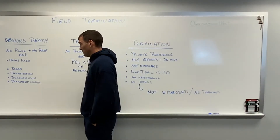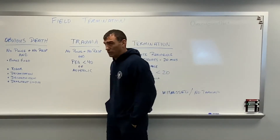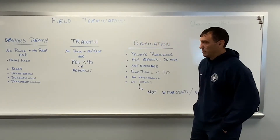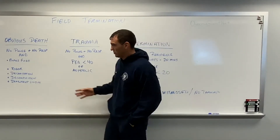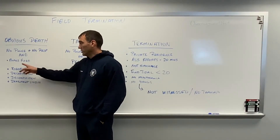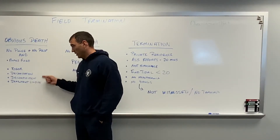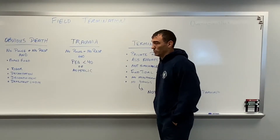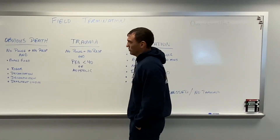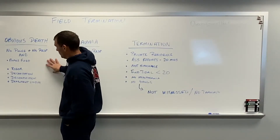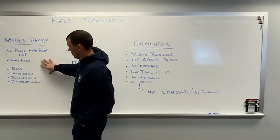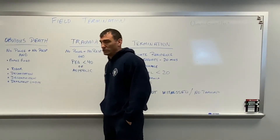For example: 'I found the patient with no pulse, no respirations, and they were cold to the touch.' Cold to the touch is not listed as a reason for obvious death, so it can't be used. While it may be an assessment tool, it should not be in your documentation. If you call somebody in the field and don't list the required criteria — no pulse, no respirations, fixed pupils, and one of those four things — you documented incorrectly and technically broke protocol.